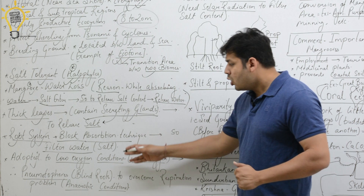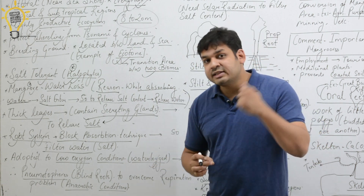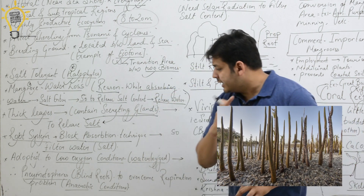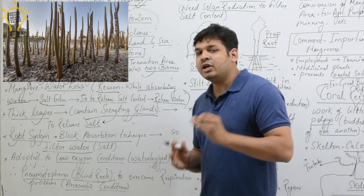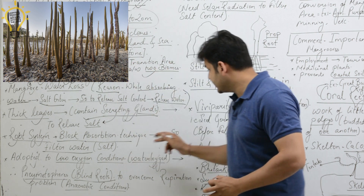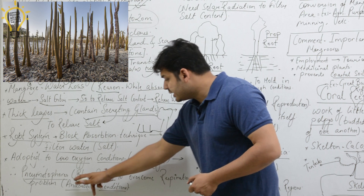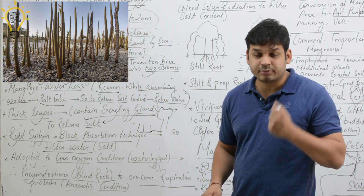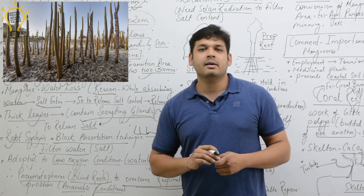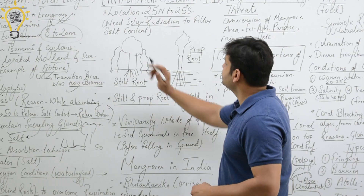Mangroves are adapted to low oxygen conditions because they grow in water-logged areas. Even in waterlogged conditions they still need oxygen, so they have pneumatophores — roots that come up above the land surface, as you can see in pictures. These blind roots come up to overcome respiration problems and absorb oxygen. They help manage anaerobic conditions. You can see pneumatophores in the Sundarbans delta as well.